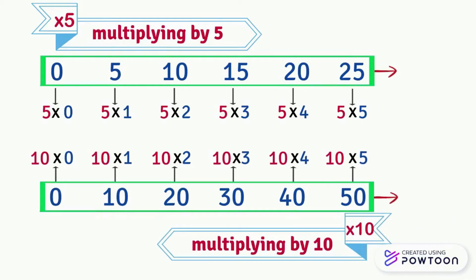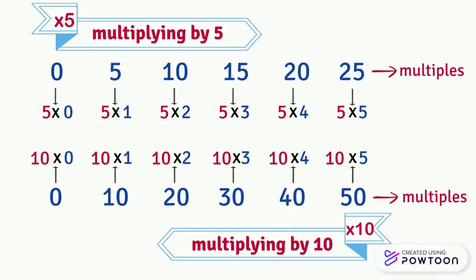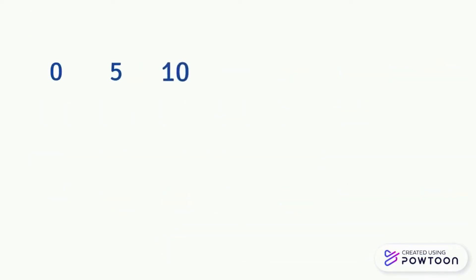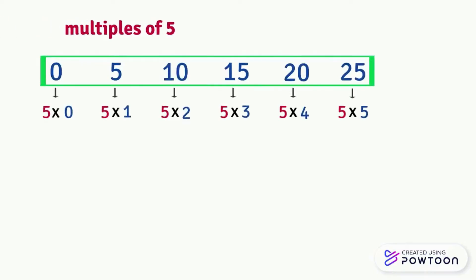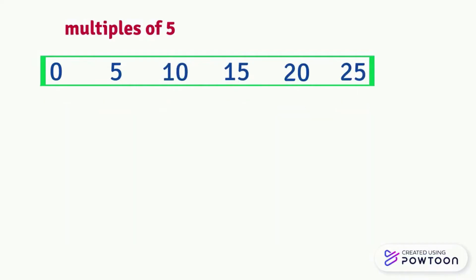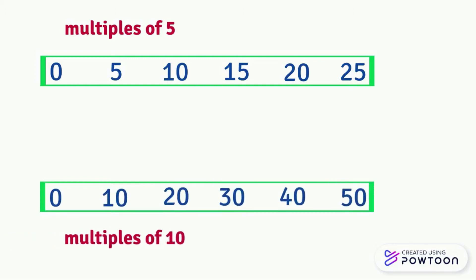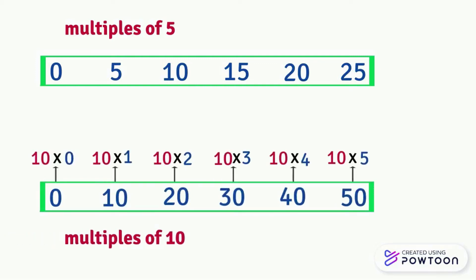These numbers are called multiples. Multiples of a number are the results of multiplying that number by another number. We say that 0, 5, 10, 15, 20, etc. are all multiples of 5 because they are the results of multiplying by 5. Similarly, 0, 10, 20, 30, 40, etc. are all multiples of 10 because they are the results of multiplying by 10.